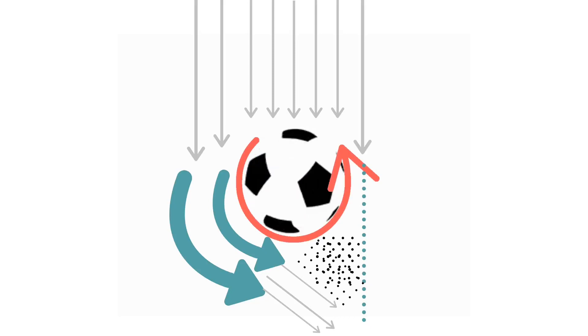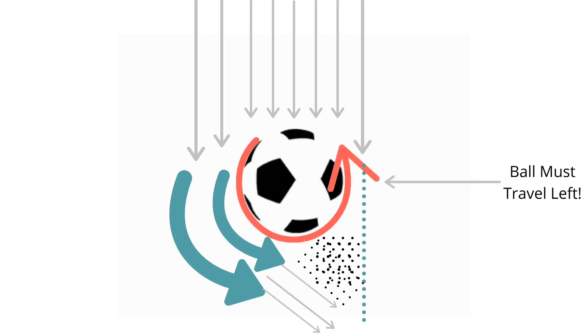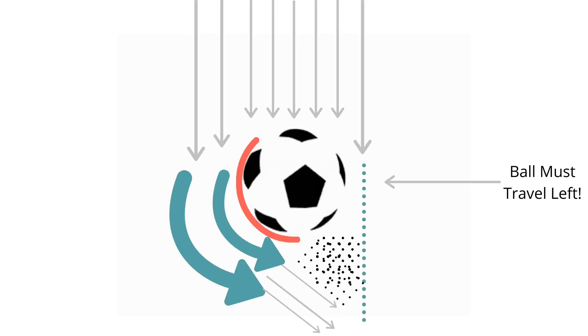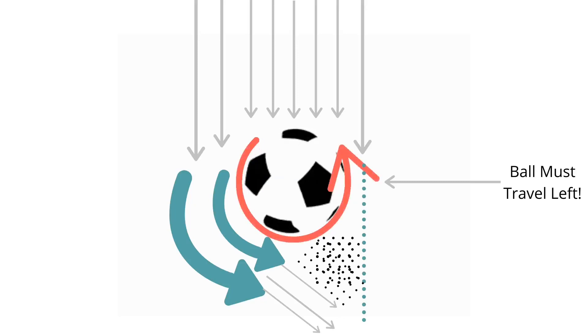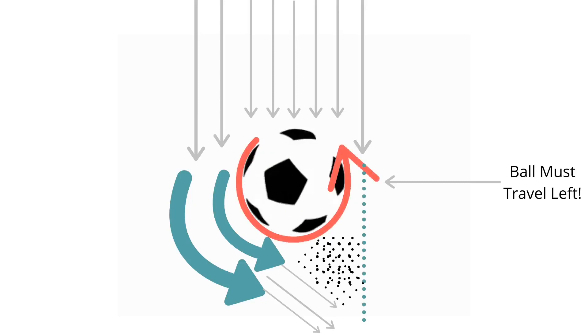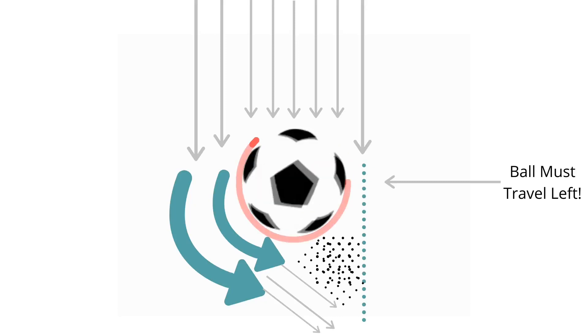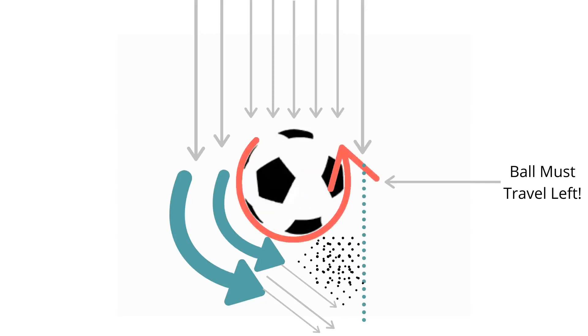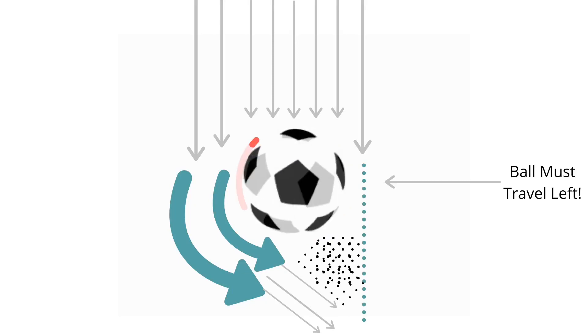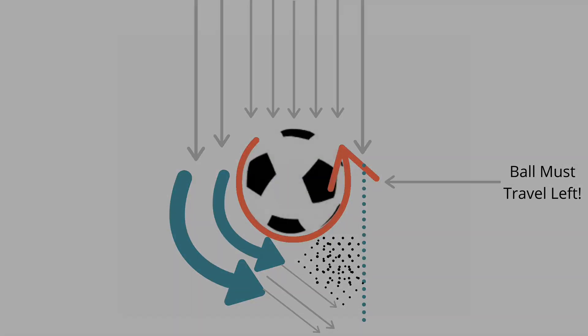The spin on the ball leads to a deflected wake, where there is greater air pressure on the right side of the ball, which pushes the ball to the left. Since the air streams on the left side of the ball deflect to the right, the ball must travel to the left. This phenomenon is known as the Magnus effect.